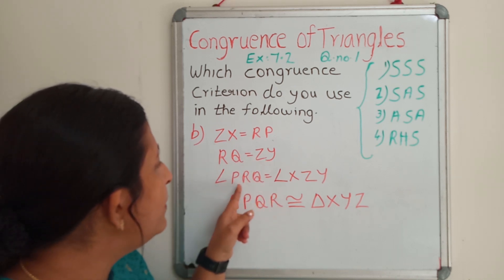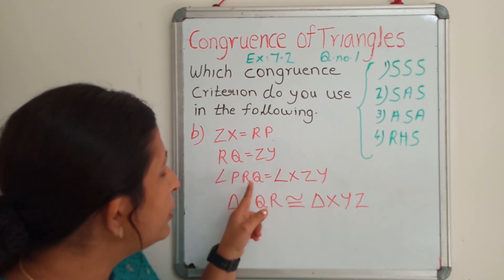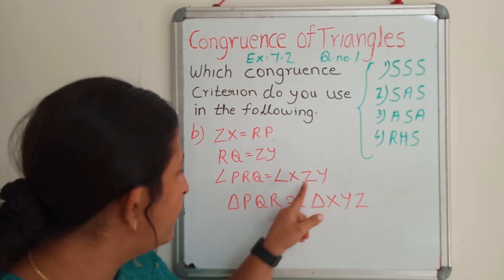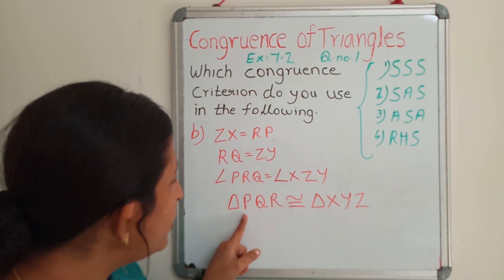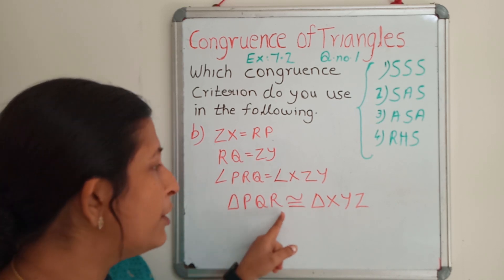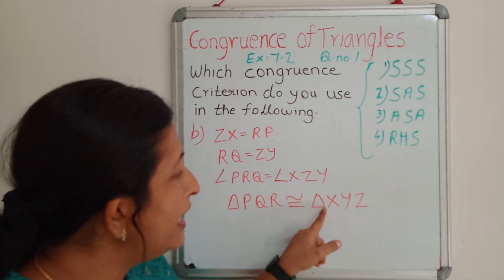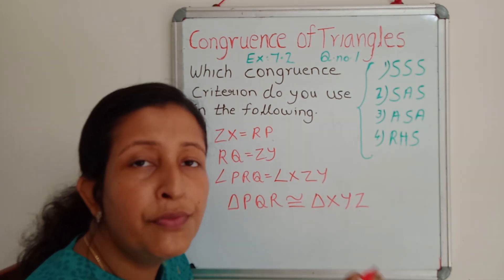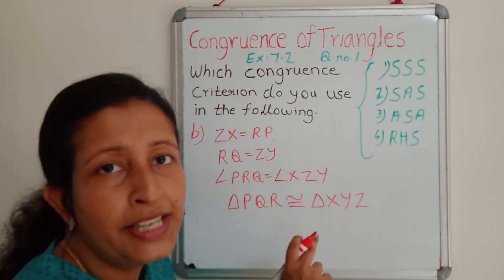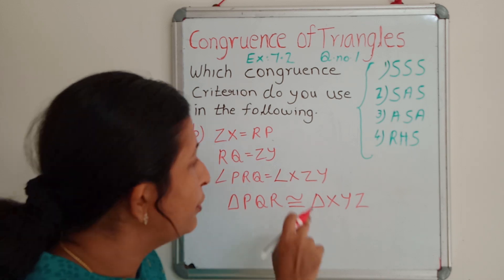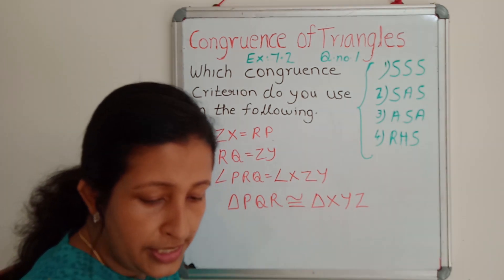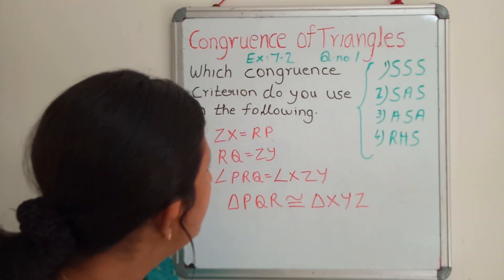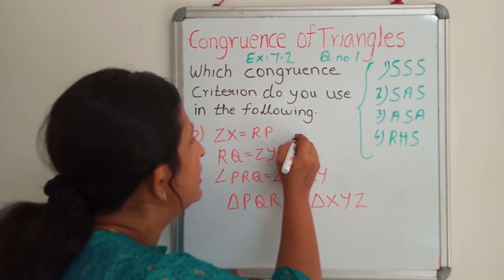For question number B, they have given 3 data: ZX equal to RP, RQ equal to ZY, and angle PRQ equal to angle XZY. So triangle PQR is congruent to triangle XYZ. We have to find out which criteria should be used for this congruency. First I am going to draw 2 triangles.